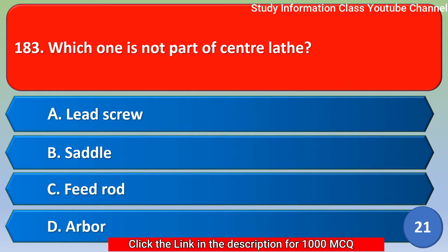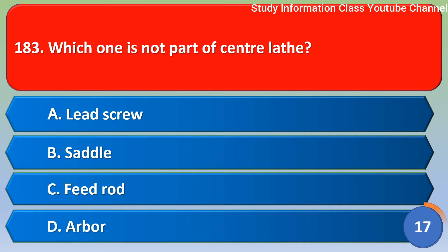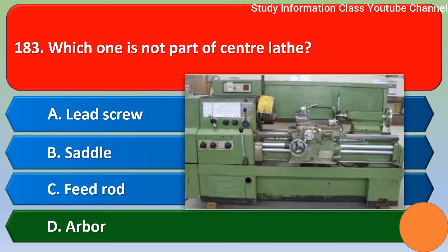Next question: which one is not part of a central lathe? Option A lead screw, option B saddle, option C feed rod, option D all of the above. The correct answer is option D — all of the above.